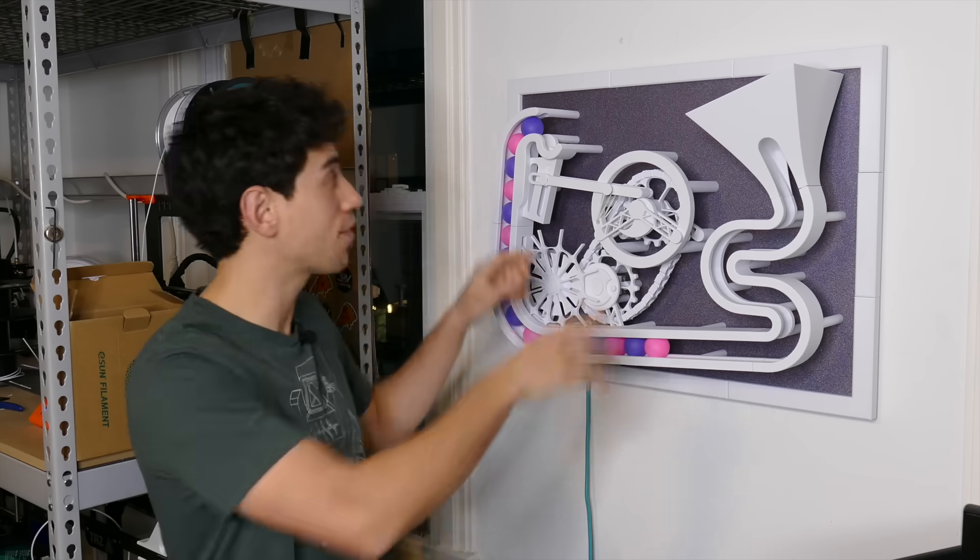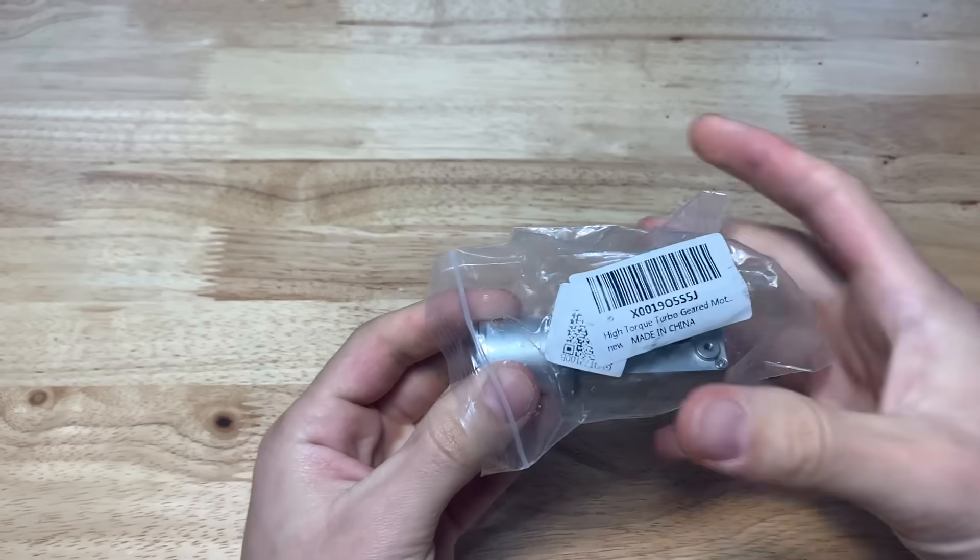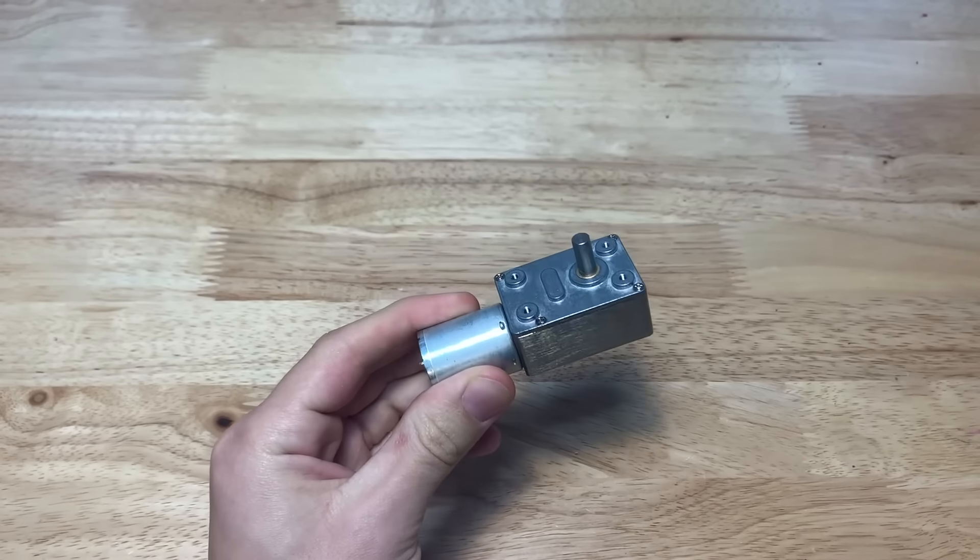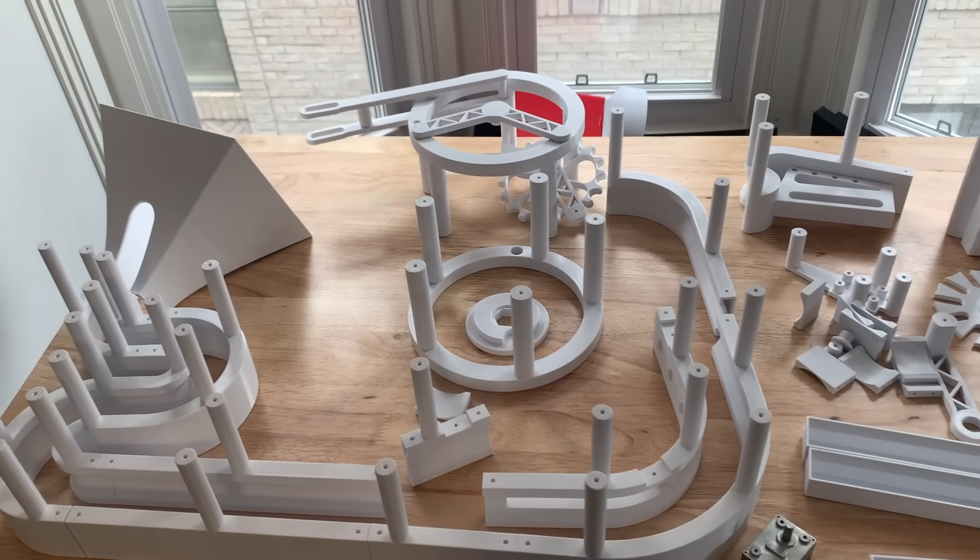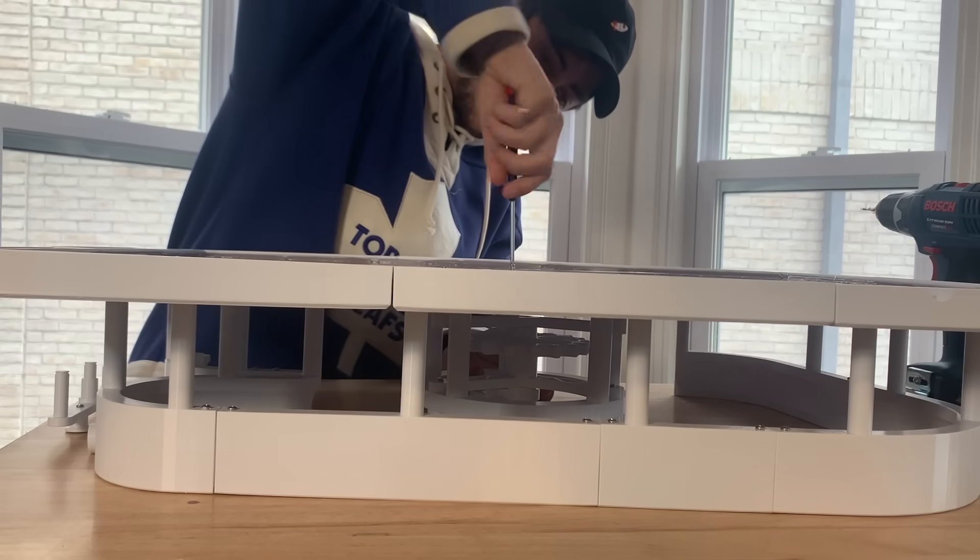Everything here is printed except for the backboard which is laser cut acrylic that I then spray painted, the motor which is obviously not 3D printed, and the elastic bands which are also not 3D printed. Now that I had all the parts it was time to assemble it. It went surprisingly well.